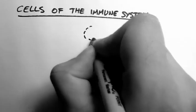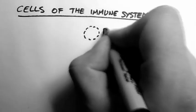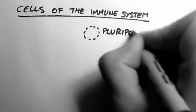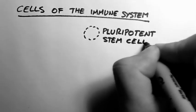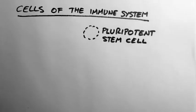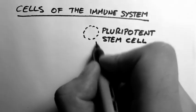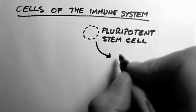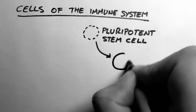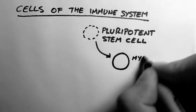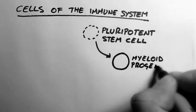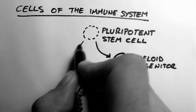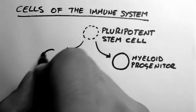Now they all start with a pluripotent stem cell. And then this pluripotent stem cell can become other types of cells. It could become a myeloid progenitor cell or a lymphoid progenitor cell.